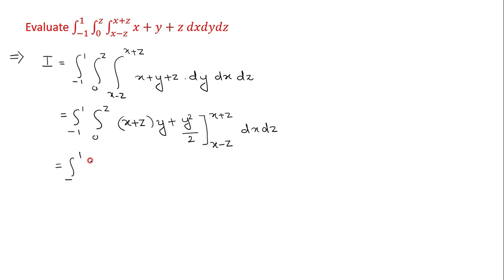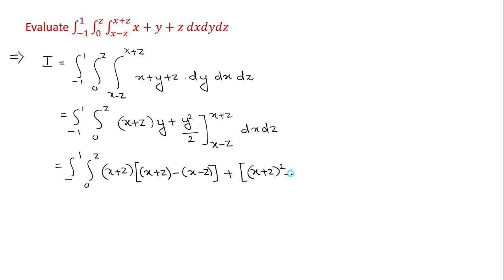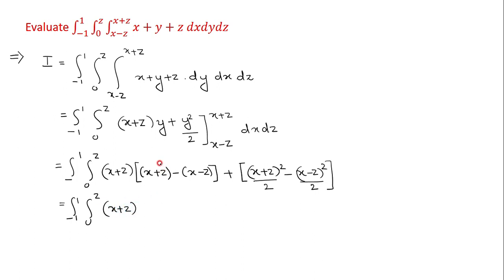Substituting the limits for y: the upper limit is x plus z and the lower limit is x minus z². For the first bracket, the x terms cancel, giving z + z = 2z. For the second term, we have (1/2)[(x+z)² minus (x-z)²], using the (a+b)² and (a-b)² expansion formulas.